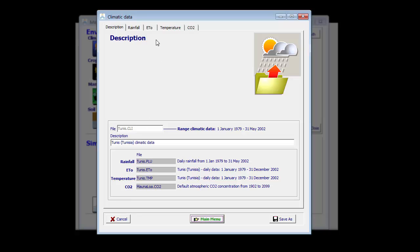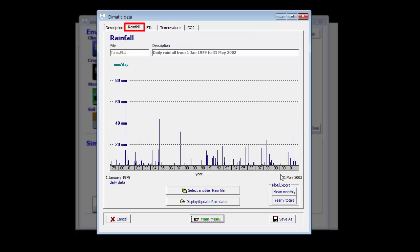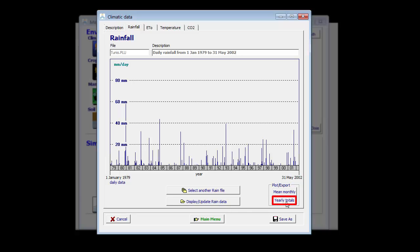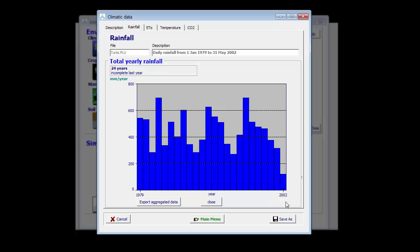In the other tabular sheet, we can visualize the climatic data. In the rainfall tab, we can see the daily rainfall. We can also plot it as mean monthly data. Here it is plotted together with the ET node and half of the ET node. Or we can see the variation of the rainfall data over the years. We can note that rainfall drastically changes from one year to the other.